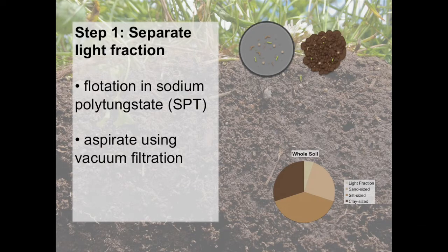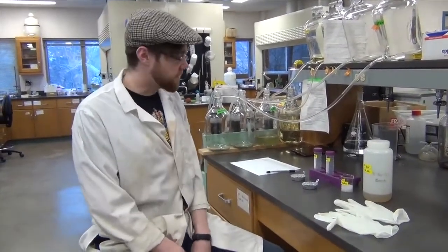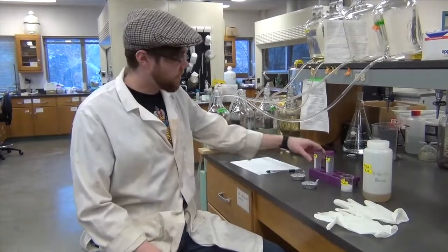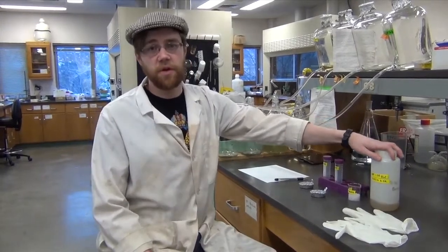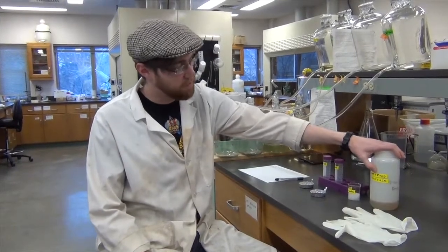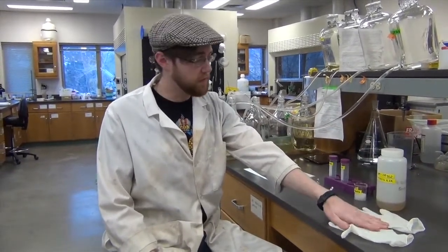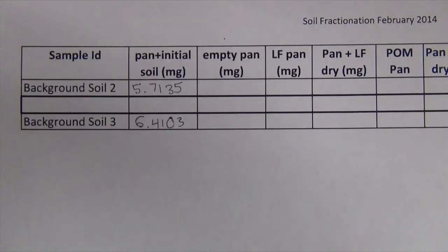We'll start from the very beginning. So day one of soil fractionation, you will need your soil samples, some conical centrifuge tubes, glass beads, sodium polytungstate, often abbreviated to SPT. For this particular procedure, we will use a density of 1.85. Water has a density of 1. This is almost twice as dense as water. A pair of gloves to protect yourself. SPT is non-toxic but can be a mild irritant, so we want to wear a little bit of protection.